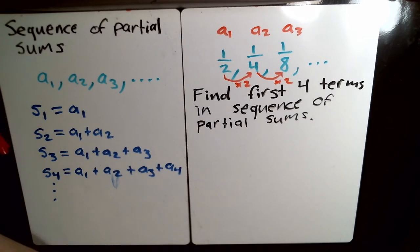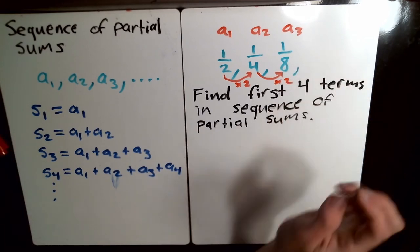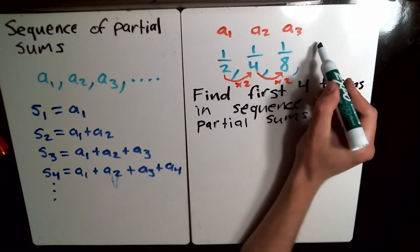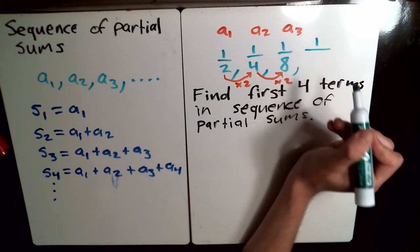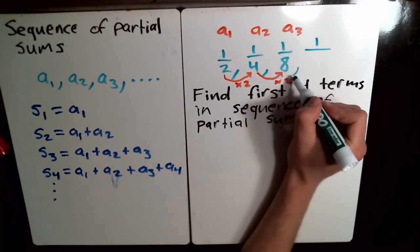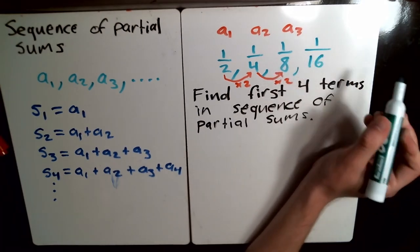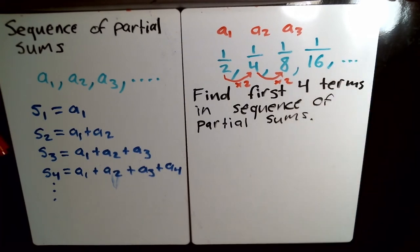So, my next term, the next term in this sequence, well, I'd still have a one on top, but I'd times by two again, and I would get 16 on the bottom. That would be my next term in this sequence.